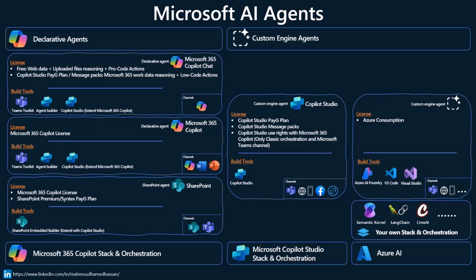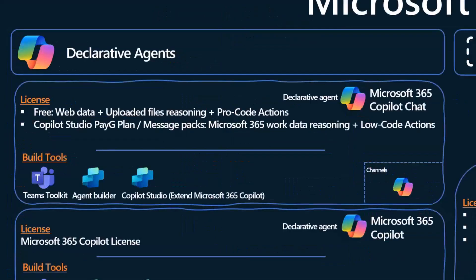Starting with declarative agents, there are different types. Let me begin with a completely free option from Microsoft: Microsoft 365 Copilot Chat, which you can get with any M365 SKU containing Entra ID. The agent within Copilot Chat is completely free when you are reasoning over web data, over uploaded files in the agent context, or even when building actions or API plugins that connect to any line of business application. We have a lot of flexibility to build very complex agents with this completely free SKU.